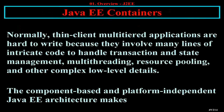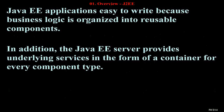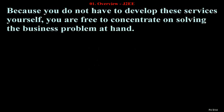Java EE Containers. Normally, thin-client multi-tiered applications are hard to write because they involve many lines of intricate code to handle transaction and state management, multi-threading, resource pooling, and other complex low-level details. The component-based and platform-independent Java EE architecture makes Java EE applications easy to write because business logic is organized into reusable components. In addition, the Java EE server provides underlying services in the form of a container for every component type. Because you do not have to develop these services yourself, you are free to concentrate on solving the business problem at hand.